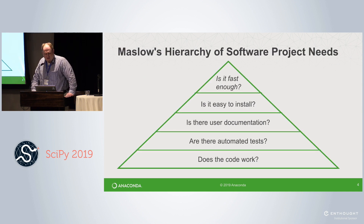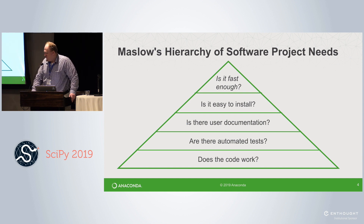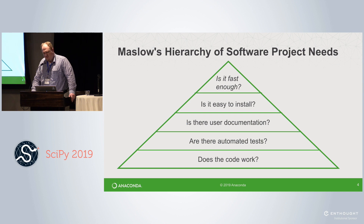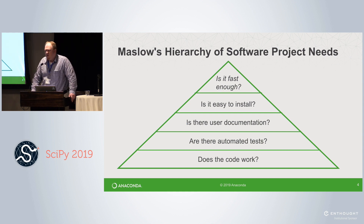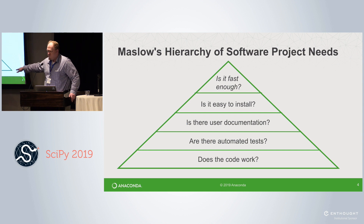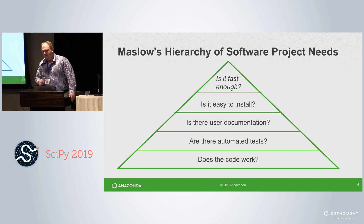Another thing to keep in mind: Maslow maybe wasn't a programmer, but consider a Maslow's hierarchy of software project needs. Where are you on this pyramid? The base layer is: does this program run? If your program doesn't run, don't worry about making it faster. Are there automated tests? Is there user documentation? It may be a better use of your time to make your program easier to understand than to make it faster, unless performance actually violates the first thing. Is it easy to install? If you can check off all of these boxes reasonably, then ask yourself: is it fast enough?